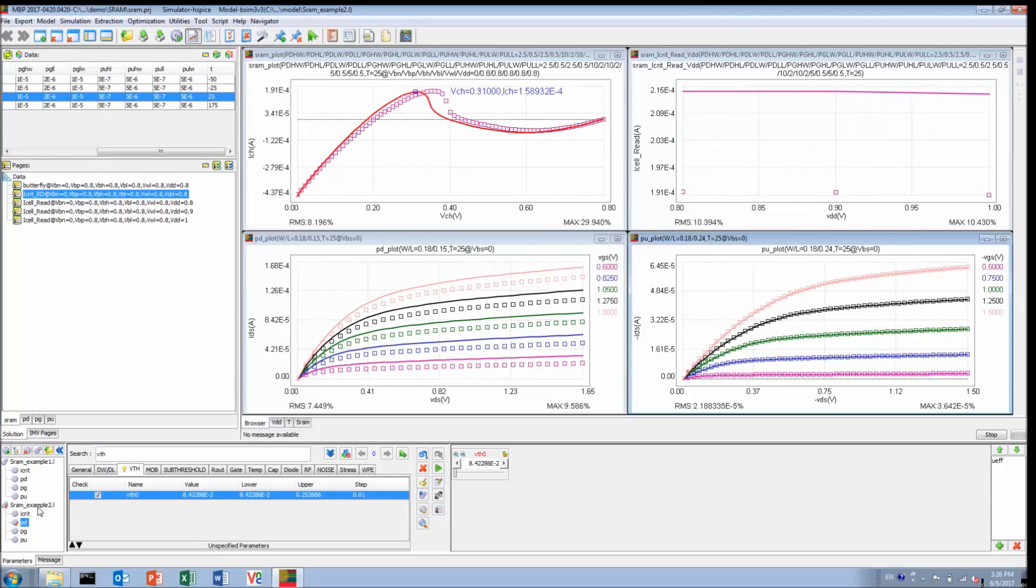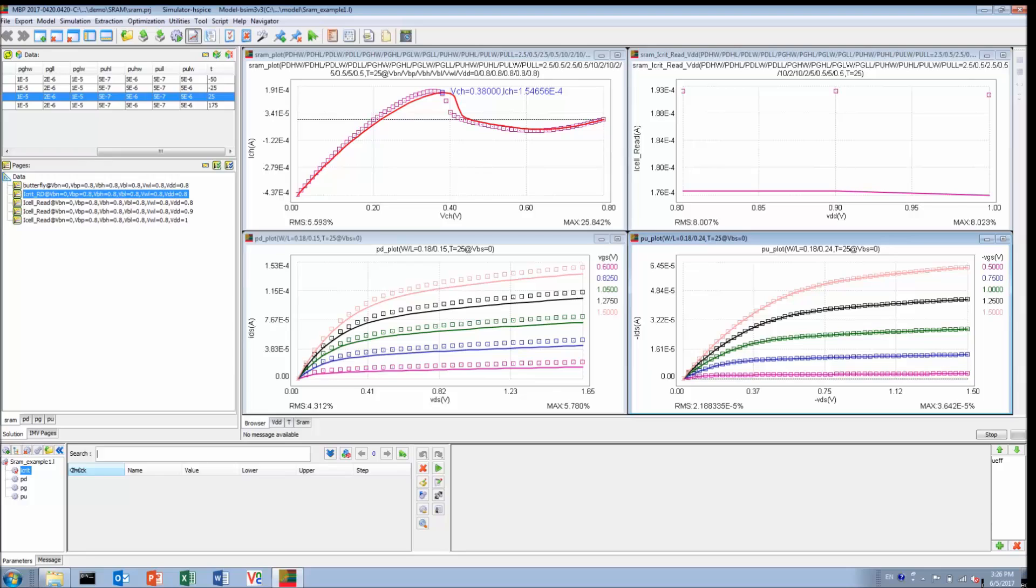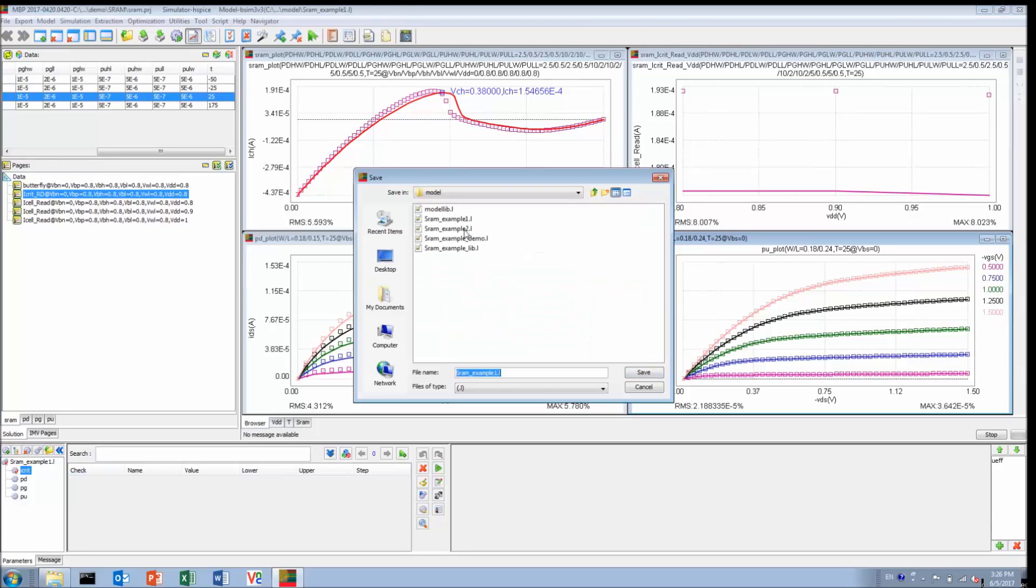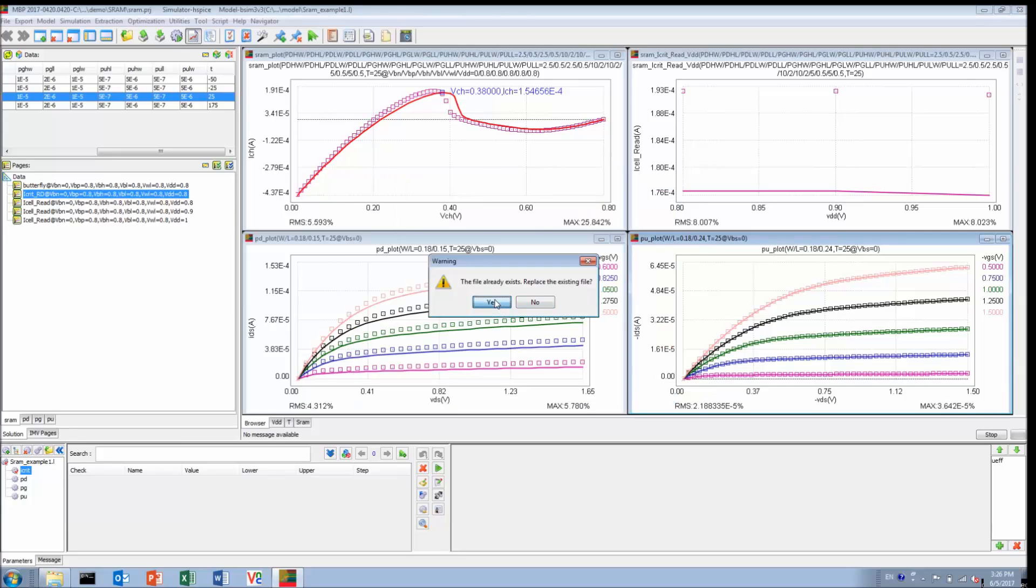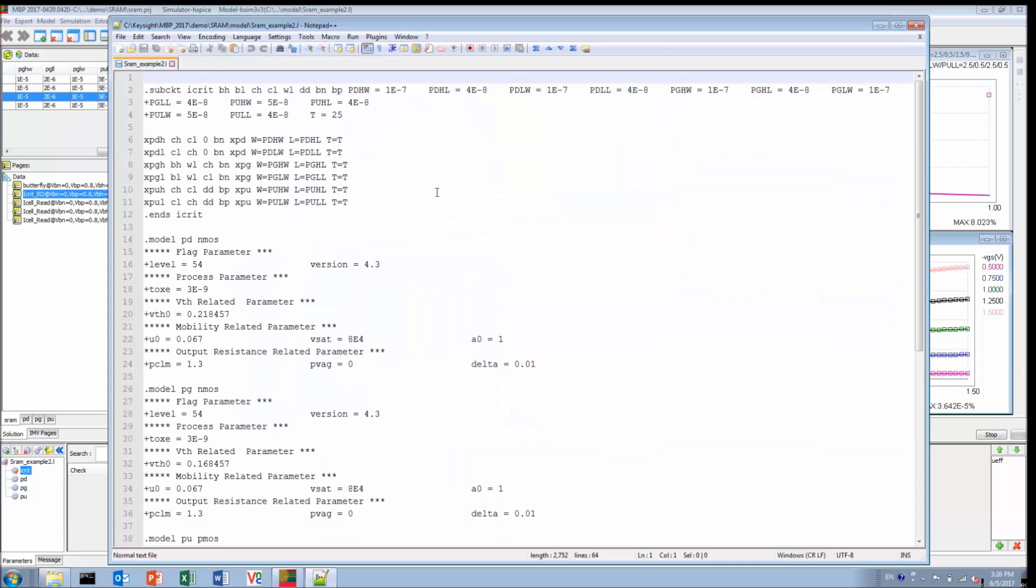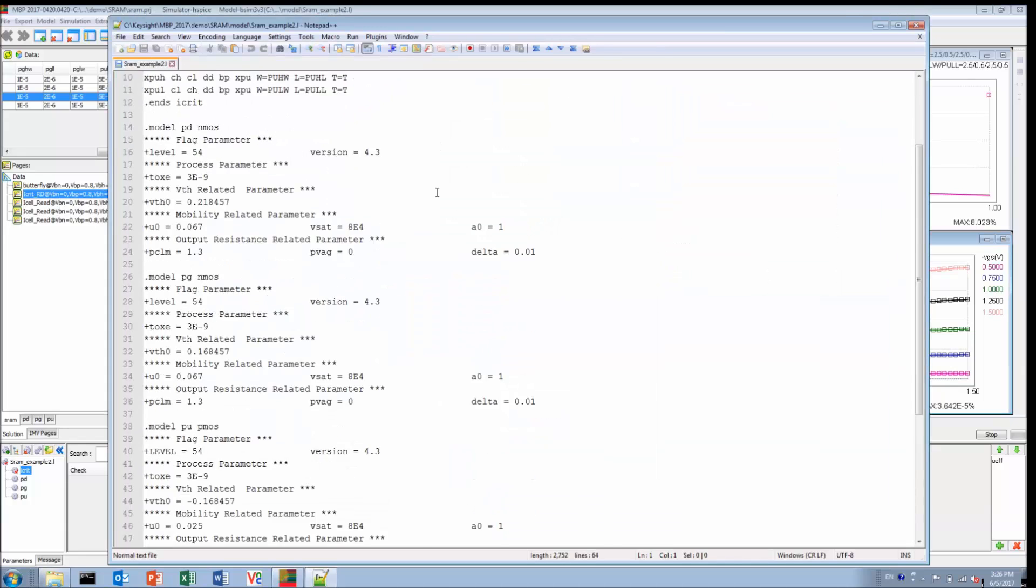Finally, let's drop the model comparison, remove one model, and save the tuned SRAM sub-circuit model to the hard drive as a new model file, which has the same text format yet with updated model parameter values. This shall conclude my live demo.